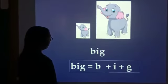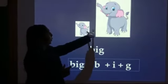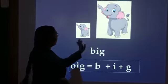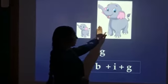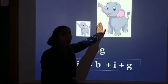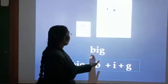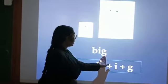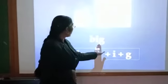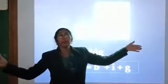See, here are two elephants. One is small and one is big. So our first word is big. What is the word? Big. B-I-G, big.